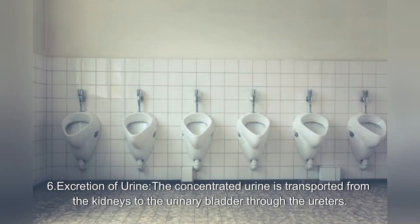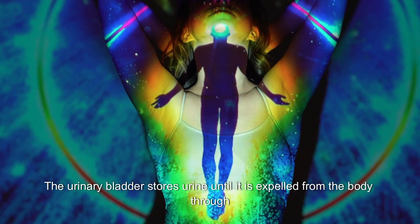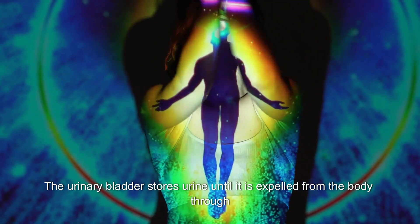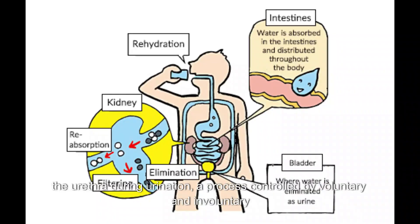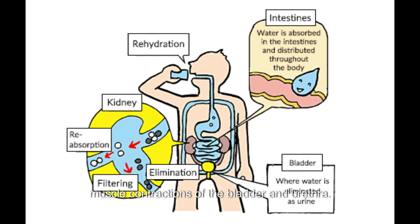Excretion of urine: The concentrated urine is transported from the kidneys to the urinary bladder through the ureters. The urinary bladder stores urine until it is expelled from the body through the urethra during urination, a process controlled by voluntary and involuntary muscle contractions of the bladder and urethra.